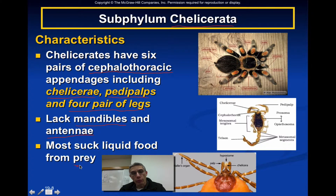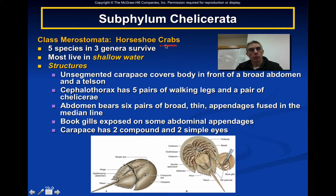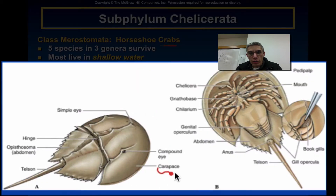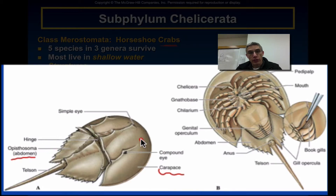The first representative member of subphylum Chelicerata is the horseshoe crab, belonging to class Merostomata. These are not true crabs — crabs belong to the crustaceans. Horseshoe crabs live in shallow marine environments with salt water. They have an unsegmented carapace covering the body in front of a broad abdomen and telson. The abdominal region is sometimes called the opistosoma, while the cephalothorax is called the prosoma — 'pro' meaning in front of.